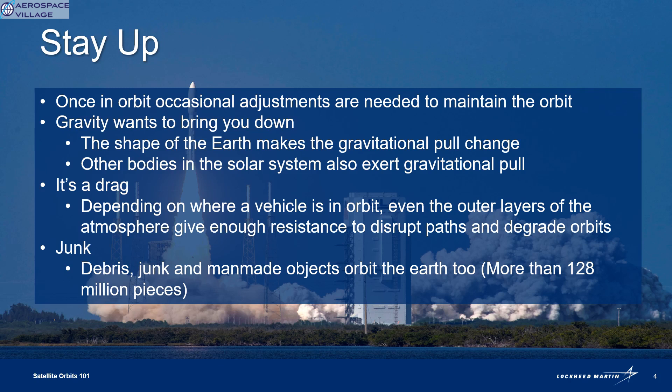This drag can even increase when the Sun comes around. Just like heat makes air expand down here, the warming of the atmosphere can make drag even worse up there. And let's not forget all the junk that satellites and the people who fly those satellites have to dodge in order to make a journey around the Earth. There are more than 128 million separate pieces, parts, and objects roaming around our planet right now.